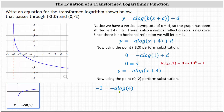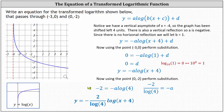From here, if we solve for negative a, we can find an equation for the logarithm. Dividing both sides by common log four, we have negative a equals negative two divided by common log four, which means an equation is y equals negative two divided by common log four, times common log of the quantity x plus four.